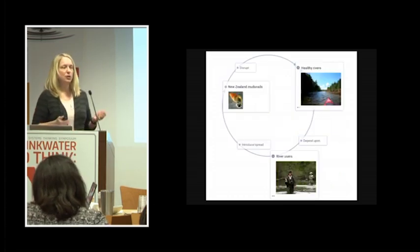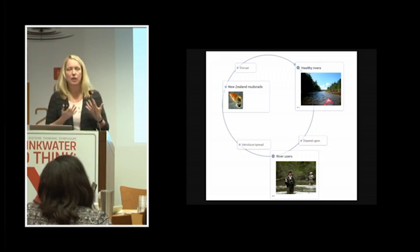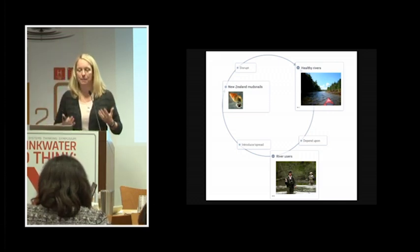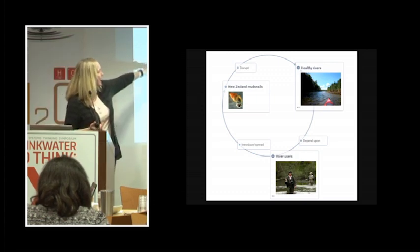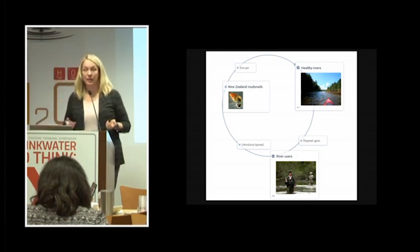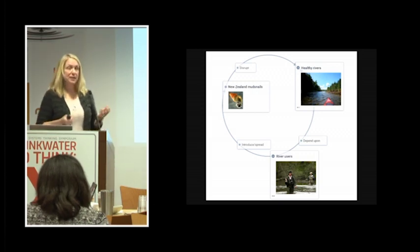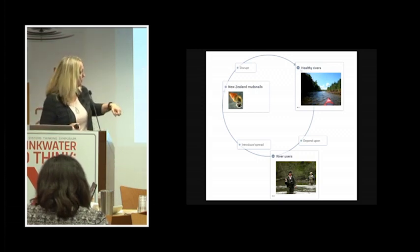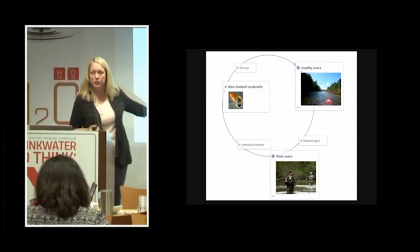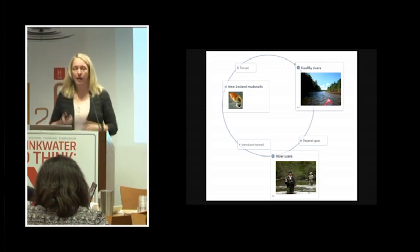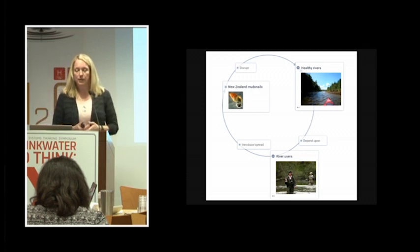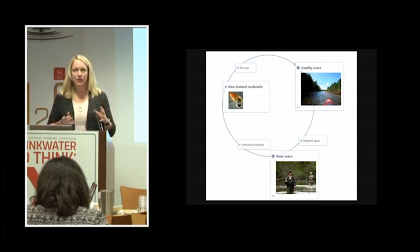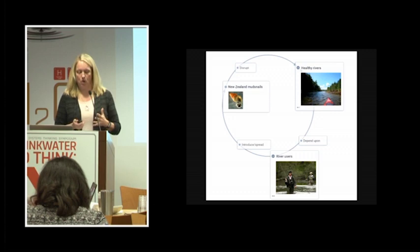So, first I can show you where we started, where I started thinking about this issue, a very simple mental model. We have our New Zealand mud snail. Here's our bad guy. And what do they do? They disrupt healthy rivers. And who does that affect? It affects the healthy rivers. It also affects the river users, the people who depend upon the river for recreation, or even their livelihoods, are affected by this. So, this was the starting point. Okay, here's our system, but what else do we need to know?